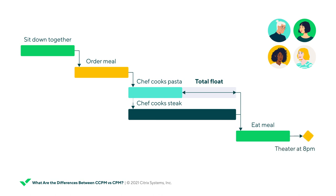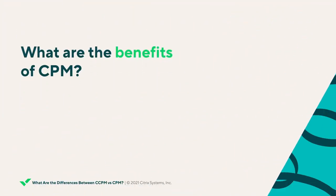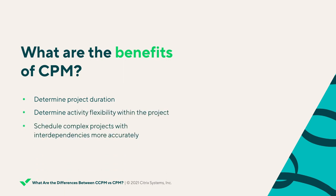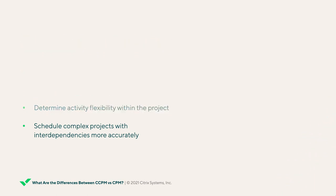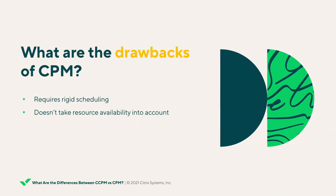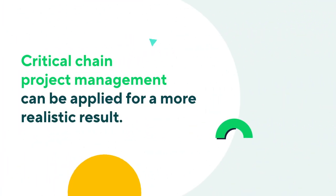Since your group is going to the theater at 8pm, Critical Path Method will allow you to determine when you'll need to make your restaurant reservation in order for everyone to finish their meal before the show. CPM therefore allows project managers to determine the duration of the entire project, which tasks have flexibility, and when the project needs to commence in order to meet a deadline. However, CPM assumes that resources for each activity will be adequate and that resource scarcity won't affect completion — which those with experience in project management know is rarely the norm.